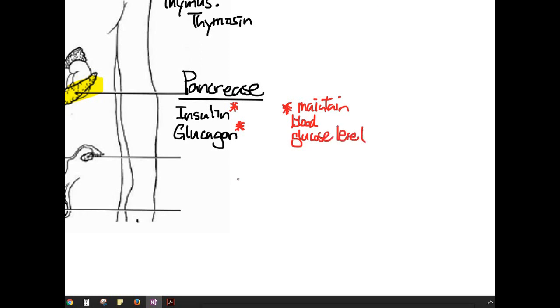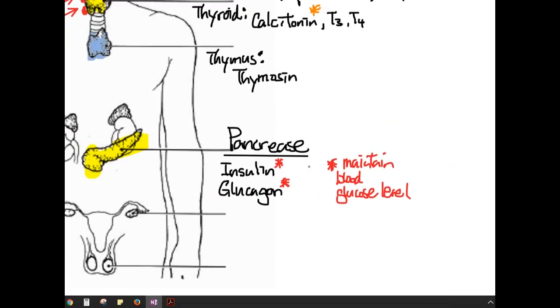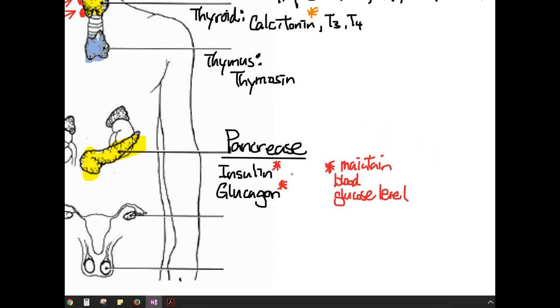They work against each other to maintain blood glucose level. So after a meal, your blood glucose level goes up. Insulin will be released to bring it back down. If you are skipping a meal, then glucose level goes down, which will trigger the release of glucagon, and glucagon will try to bring the glucose level back up.